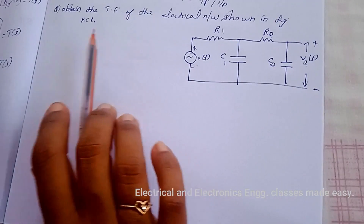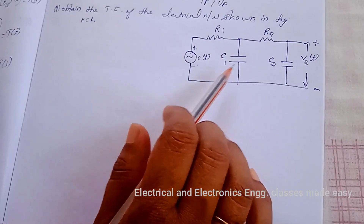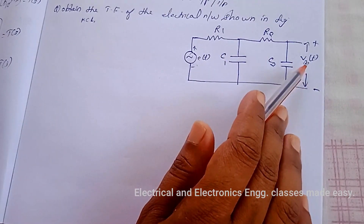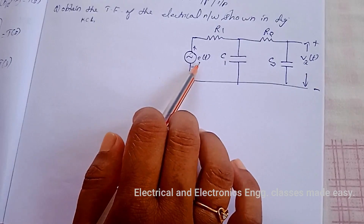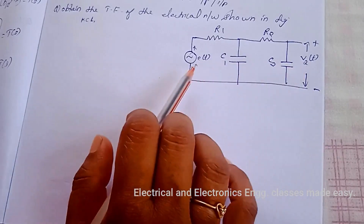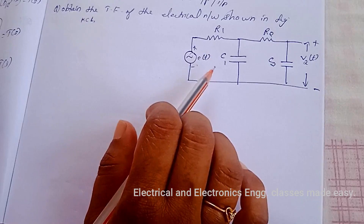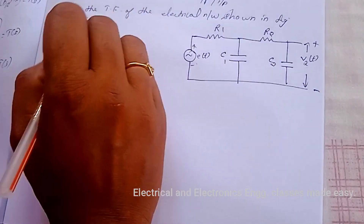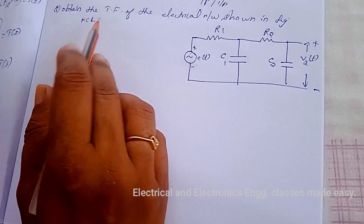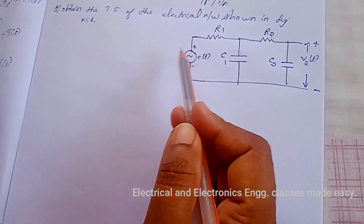Let us do an example: obtain the transfer function of the electrical network shown in the figure. Here the output is v2(t) and the input is e(t), so we have to find the transfer function as V2(s) divided by E(s). We can use either KCL or KVL; here let us apply KCL.